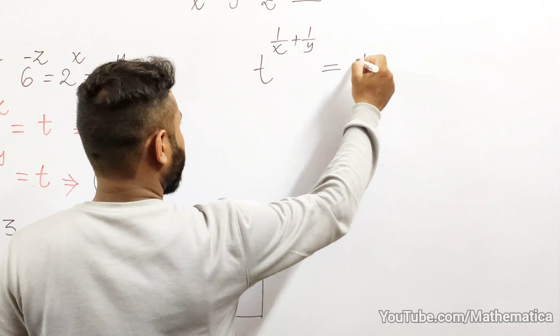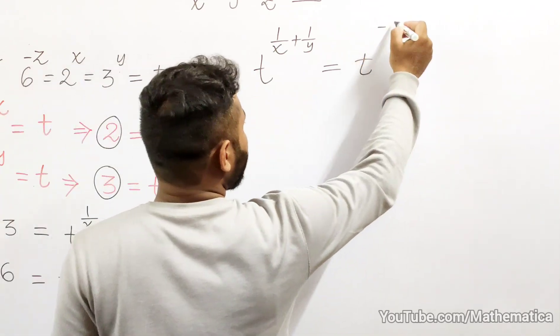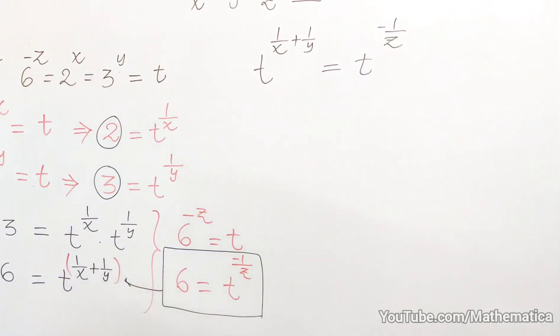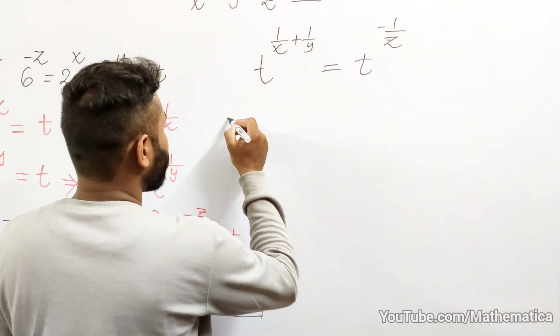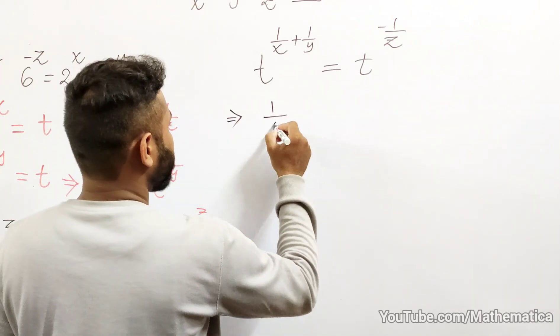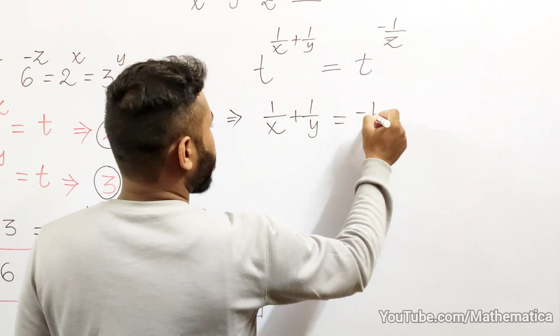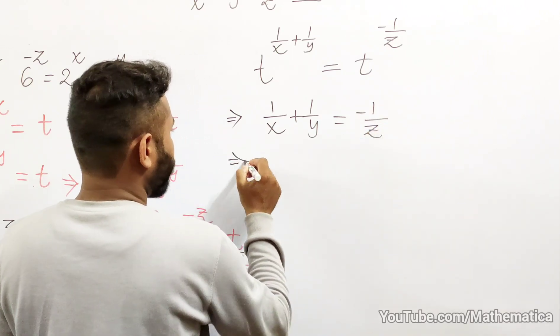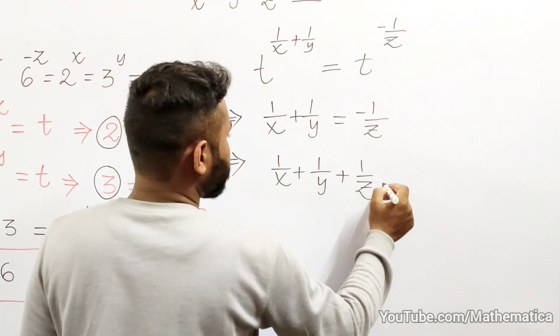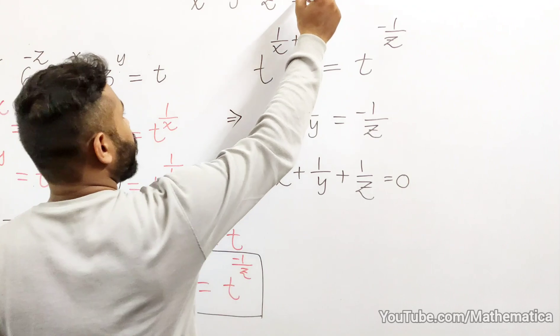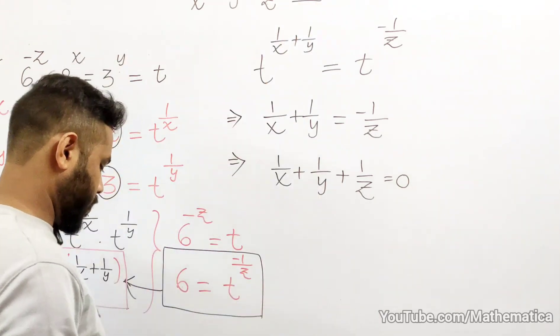is now equals to t to the power minus 1/z. Right, so I actually substituted this here. Okay, let me make a box for this one. Now because base is same, it means 1/x plus 1/y is equals to minus 1/z, and therefore 1/x plus 1/y plus 1/z must be equals to 0. So the value is nothing but 0 here.